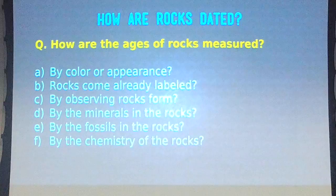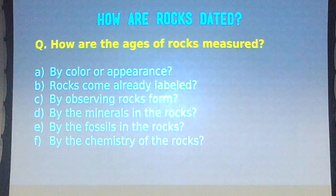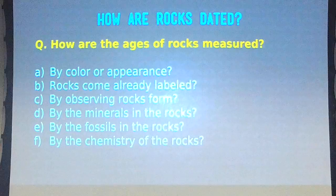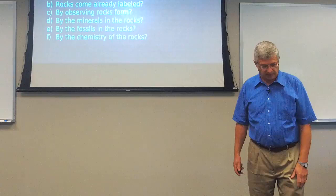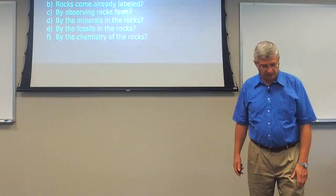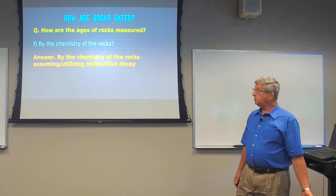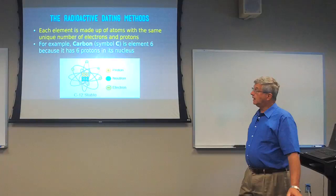The first question is: how are the ages of rocks determined? By color or appearance? Do the rocks come already labeled? By observing rocks form? By the minerals in the rocks? By the fossils in the rocks? Or by the chemistry of the rocks? The answer should be obvious — it's by the chemistry of the rocks, which is our subject this morning, and specifically by assuming and utilizing radioactive decay processes.